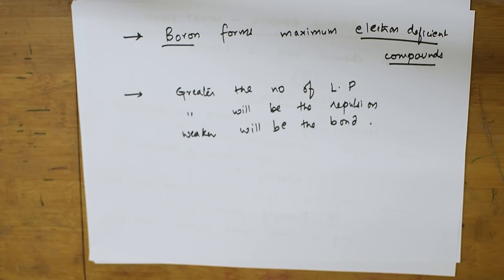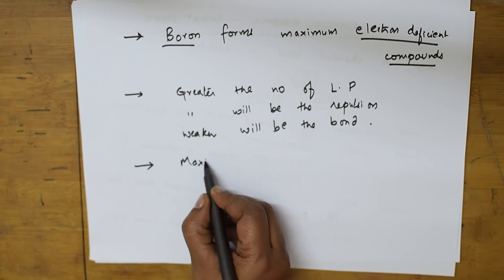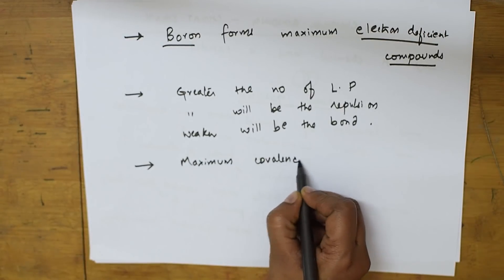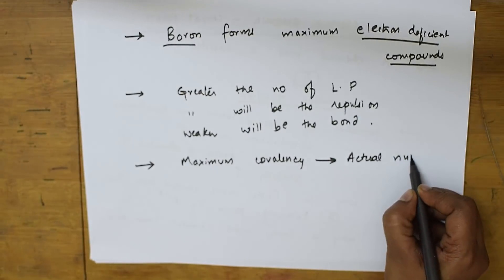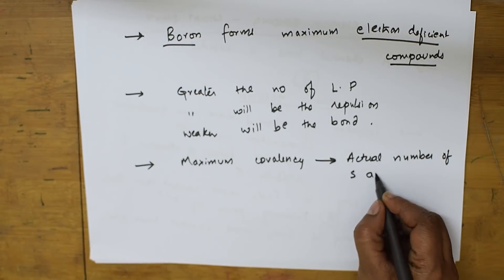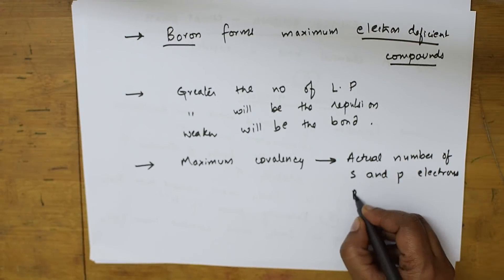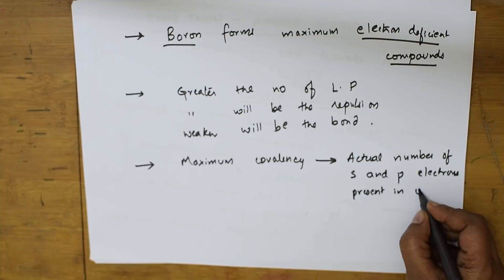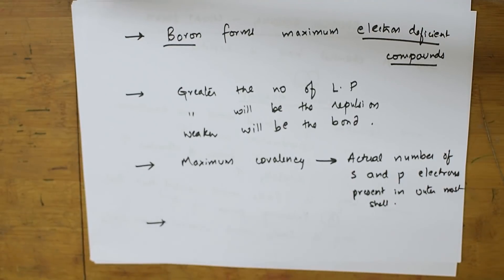The actual number of s and p electrons present in the outermost shell of any element represents the maximum covalency. So maximum covalency is nothing but the actual number of s and p electrons present in the outermost shell.